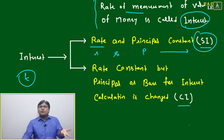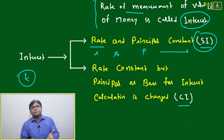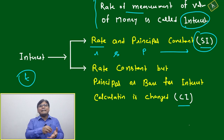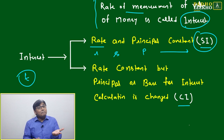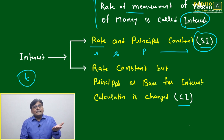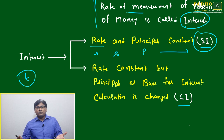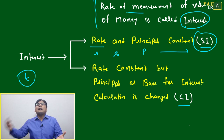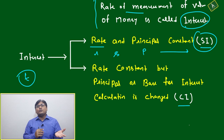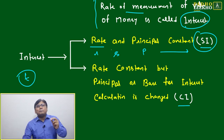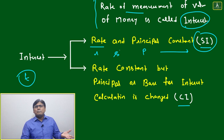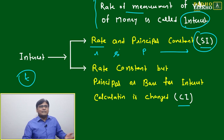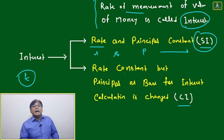If both rate R and principal amount P are constant with time, then it is called Simple Interest. The rate does not change — whatever rate existed this year will be the same next year. The principal amount also does not change — if you took two lakh today, your interest base remains two lakh for the entire tenure. So if rate and principal are both constant, it is simple interest — no complication.